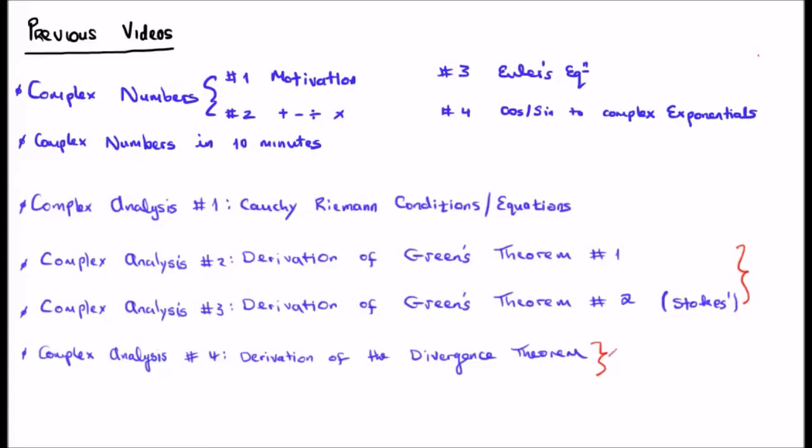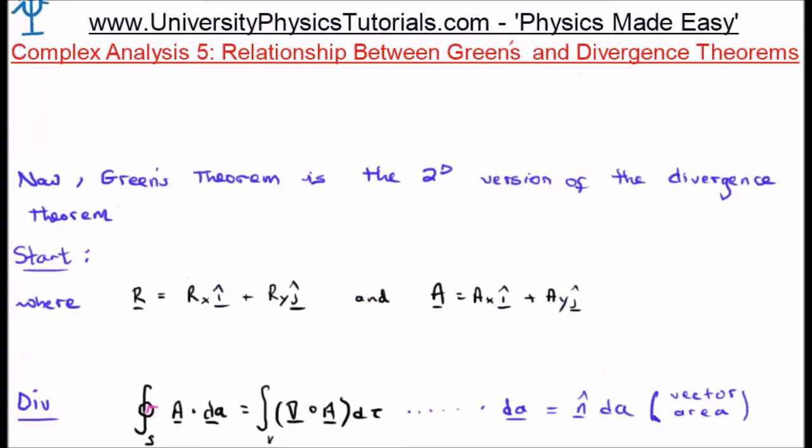So what we are going to do in this particular video is show the relationship between Green's theorem and the divergence theorem. I suggest to you that Green's theorem is the two dimensional version of the divergence theorem. In order to do this we are going to manipulate each of the theorems but using a different vector field and later we will see if the two vector fields turn out to be equal.